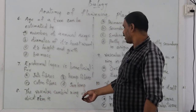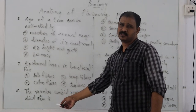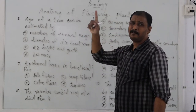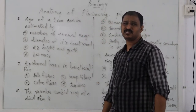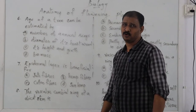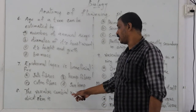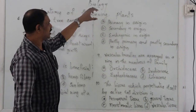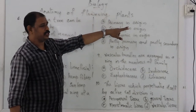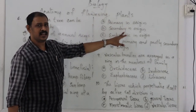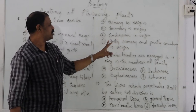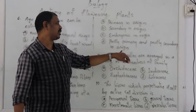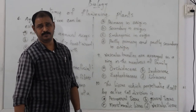The vascular cambial ring of a dicot stem — what is its origin? The cambial ring includes the intrafascicular cambium. Options: A — primary in origin; B — secondary in origin; C — embryonic in origin; D — partly primary and partly secondary in origin.